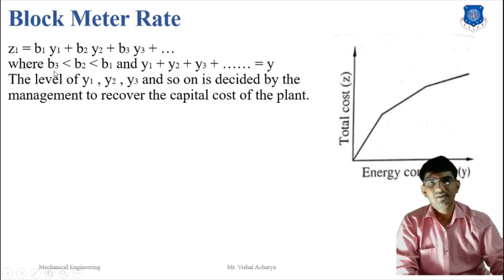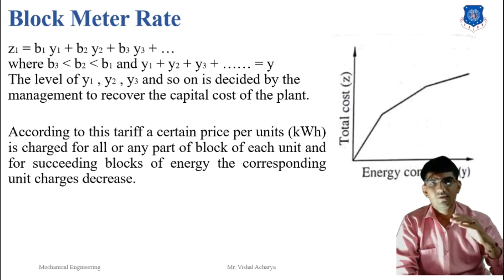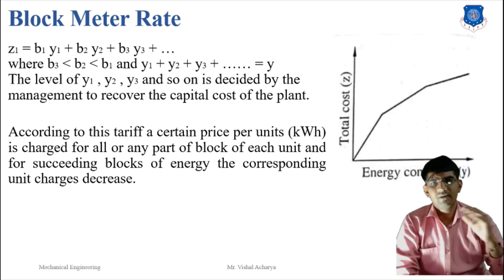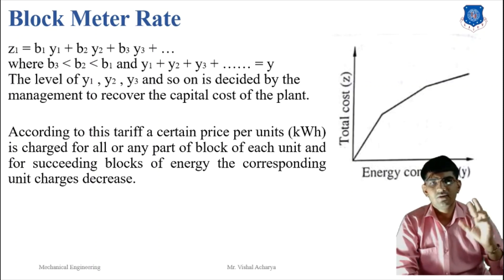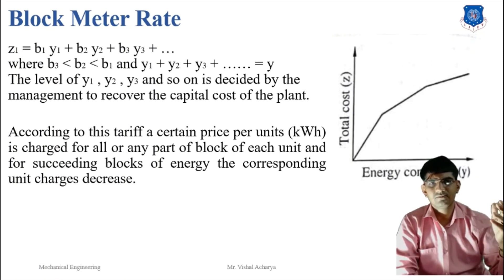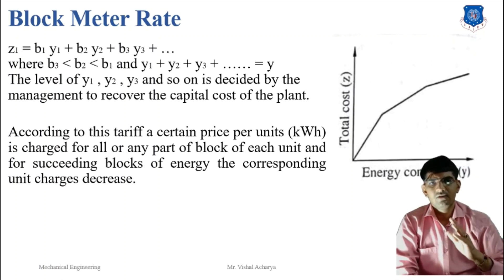Next is the block meter rate. Here the energy is divided into blocks Y1, Y2, Y3, with total energy consumption B1×Y1, B2×Y2, B3×Y3. The same price per unit is charged for each part of a block, and for each succeeding block the unit charge decreases. For example, if you use 100 units the price is 5 rupees per unit; for 100 to 200 units it is 4 rupees; and above 300 units the price per unit drops to 2.5 or 3 rupees. As energy usage increases, the per-unit price decreases.